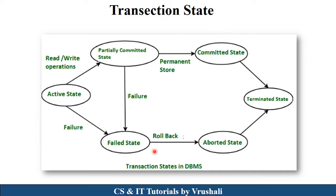Now let's look at the transaction state diagram — this is one of the most important exam questions. There are a total of six transaction states: Active State, Partially Committed State, Committed State, Failed State, Aborted State, and Terminated State. The path through Active → Partially Committed → Committed → Terminated represents a consistent database, while the path involving Fail and Aborted represents a failed or rolled-back process.